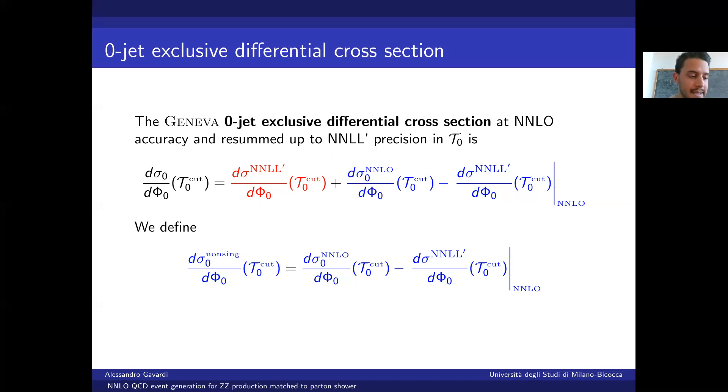In principle, we want to keep tau0 cut as small as possible to minimize our corrections, but we also have to avoid these contributions from becoming too big.